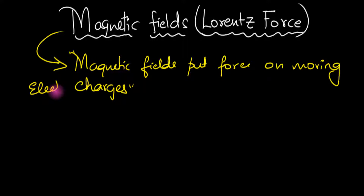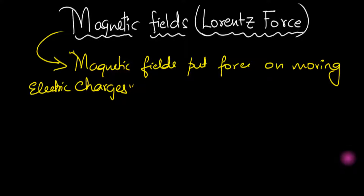The main idea is that magnetic fields put a force on moving charges — the same electric charges that you're used to. Even though it's a magnetic field, which intuitively we'd say affects only magnets, it turns out it can also affect electric charges. Amazing, isn't it? So let's investigate this force and see how we can define our magnetic field.